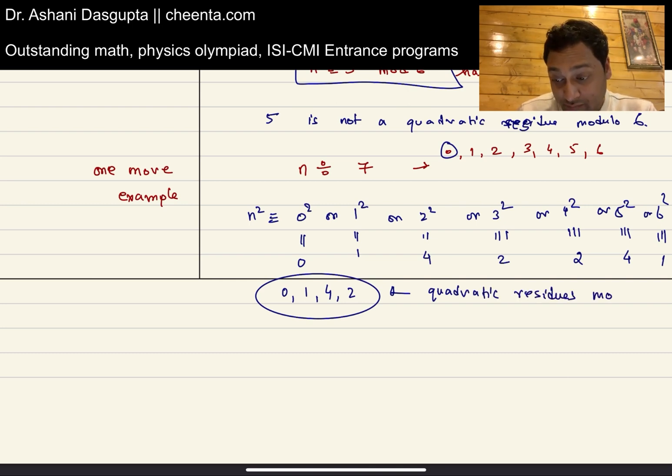Now let me ask you a question: can you find the quadratic residues mod 9 and mod 16? If you can, write that down in the comment section. There are a bunch of problems which are designed around these quadratic residues and these ideas related to quadratic residues. We discuss those quite at length in our ISI-CMI entrance program, in mathematics olympiad program, in AMC program, and so on. For more information, go to the links in the description.